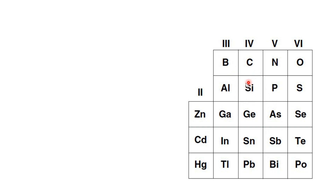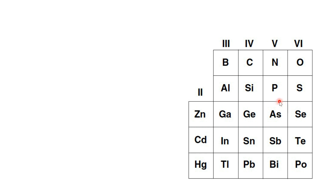When silicon of Group 4 — which has four valence electrons in the outer shell — is doped with something from Group 3 such as boron, aluminum, gallium, indium, or thallium, we are replacing it with an element of lesser valence, which means a hole or vacancy or deficiency is created. This makes it a p-type semiconductor. If doping with a Group 5 pentavalent atom, an excess electron is created, resulting in an n-type semiconductor.